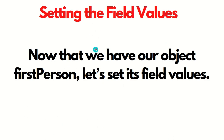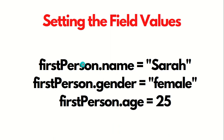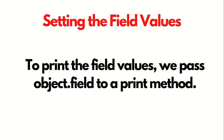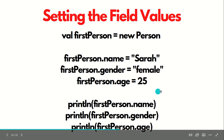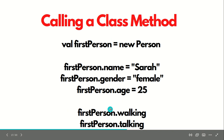How we can set up the field values? The syntax is: object name dot field equal to new value. Like in this case, firstPerson dot name equal to Sarah, gender equal to female, and age equal to 25. To print the field values, we have to use the print method — you can see the last three lines where we are printing the field values. We can call a class method like this: object dot class method. Walking and talking are the class methods.